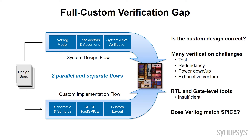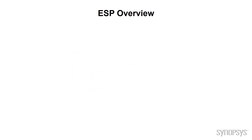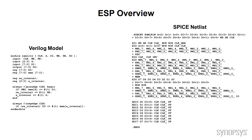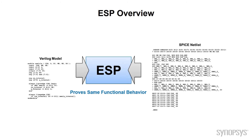Even if your Verilog model is functionally correct, does it match your circuit design? Can you even run enough vectors in a fast SPICE tool to be sure? How can you compare the output of your fast SPICE simulation to the Verilog simulation? This is where the ESP tool from Synopsys fills the verification gap. Give it a Verilog model that simulates a circuit design in SPICE format and it can help prove that both representations have the same functional behavior. The Verilog can even be a behavioral model that other formal and synthesis tools will reject.